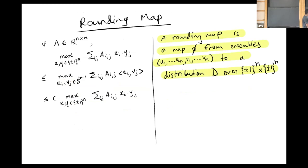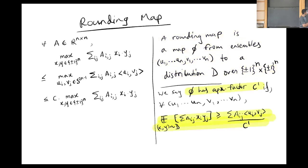Let's go on to the second aspect, which is rounding maps. There are by now several proofs of Grothendieck's inequality, several different proofs, but the majority of them use what's known as a rounding map. A rounding map is a map from ensembles of vectors, UIs and VIs, to a distribution over pairs of vectors on the hypercube. So it's a map from ensembles of vectors to solutions to bilinear maximization, a map from high dimensional solutions to a distribution over the low dimensional guys.